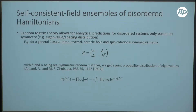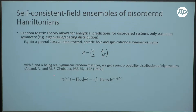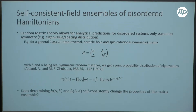So, what do we mean with self-consistent field ensembles of disordered Hamiltonians? We heard a lot about random matrix theory already. Random matrix theory allows us to make analytical predictions for disordered systems. Here, for example, we have a C1 matrix. H and delta are real symmetric random matrices here. And from this, we can compute the probability distribution for the eigenvalues. And we ask ourselves, what does change if we calculate H and delta self-consistently?